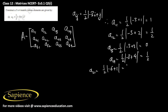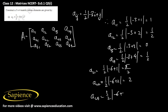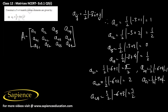a21 will be half of mod of minus 6 plus 1, which equals 5/2. a22 will be half of mod of minus 6 plus 2, that is 4 divided by 2, which equals 2. a23 will be half of mod of minus 6 plus 3, which equals 3/2. a24 will be half of mod of minus 6 plus 4, which equals 1, so that equals 4 divided by 2 giving 4.